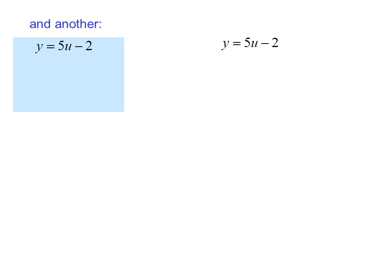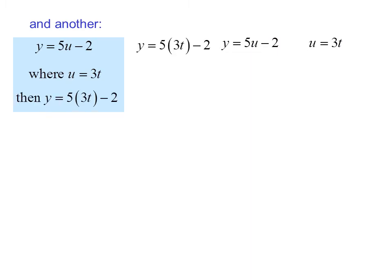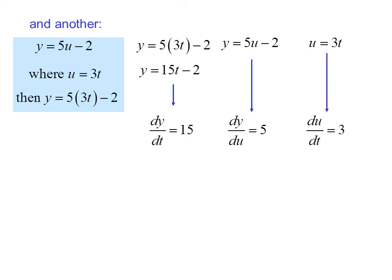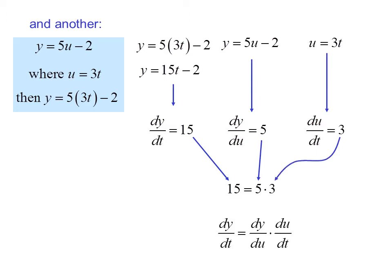Here's another example: y equals 5u minus 2, where u equals 3t. Then y equals 5 times 3t minus 2. Simplifying, y equals 15t minus 2, so dy/dt equals 15. But dy/du equals 5 and du/dt equals 3. Once again, 15 equals 5 times 3, and we see that dy/dt equals dy/du times du/dt.